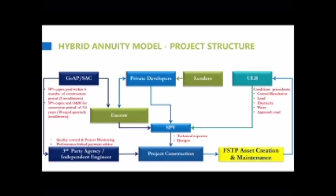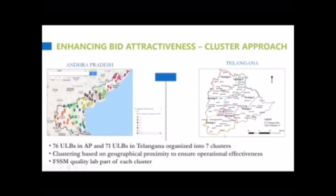76 FSTPs have been packaged into 7 packages, with each package given to a different vendor covering around 10 projects — that is the only way to bring financial viability to the whole initiative. In Andhra there are 76 projects and in Telangana 71 projects across ULBs, organized into 7 clusters. This clustering is done based on geographic proximity for ensuring operational effectiveness.